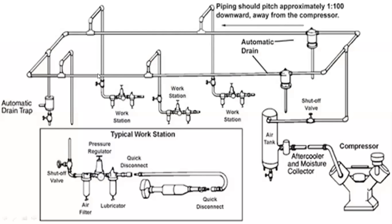This is what we call a ring main — a compressed air network running all around the plant. You have this pipeline going through the entire plant, with workstations at various points: workstation one, workstation two, workstation three, and so on. In a typical workstation, you will have a shutoff valve, air filter, lubricator, pressure regulator, and a quick connect and disconnect. This can be connected to a grinder, drilling bit, screwdriver, or any pneumatic tool.